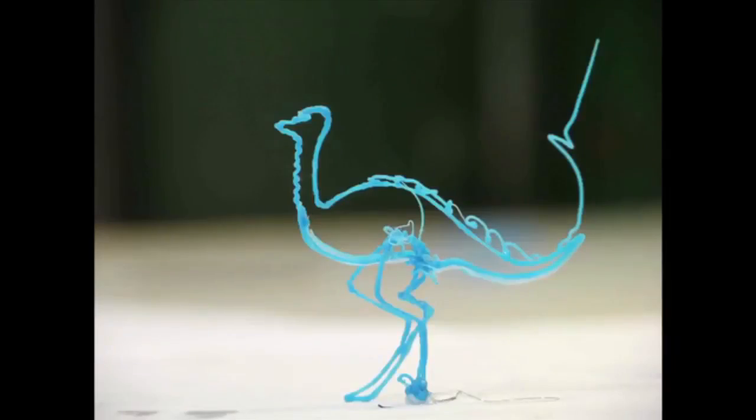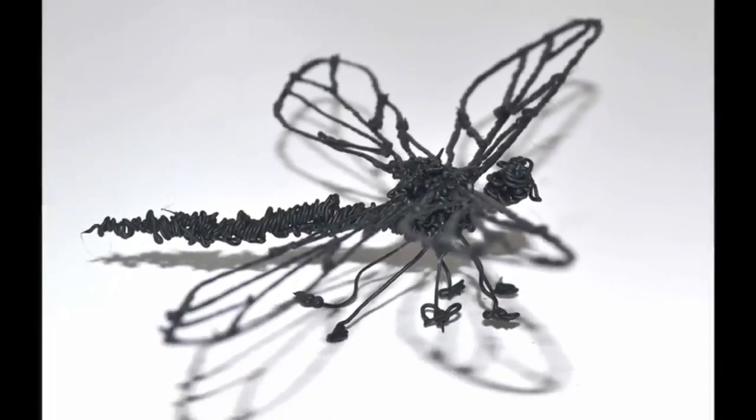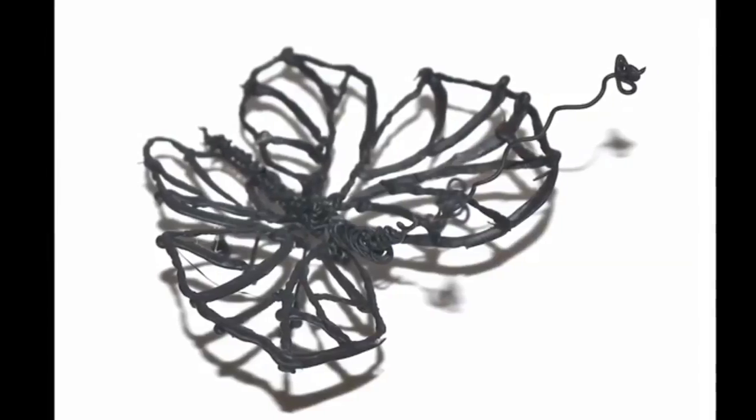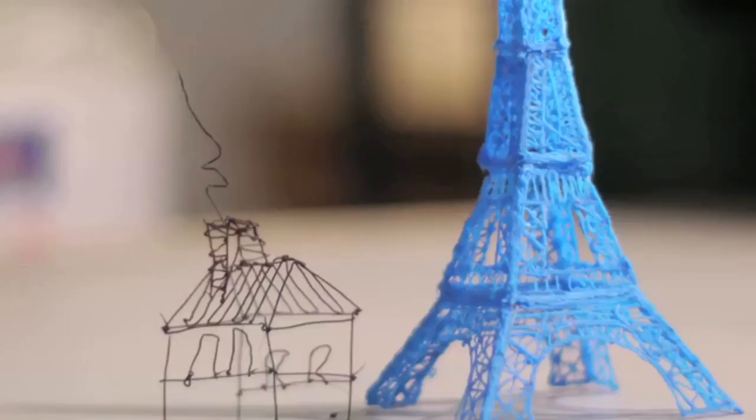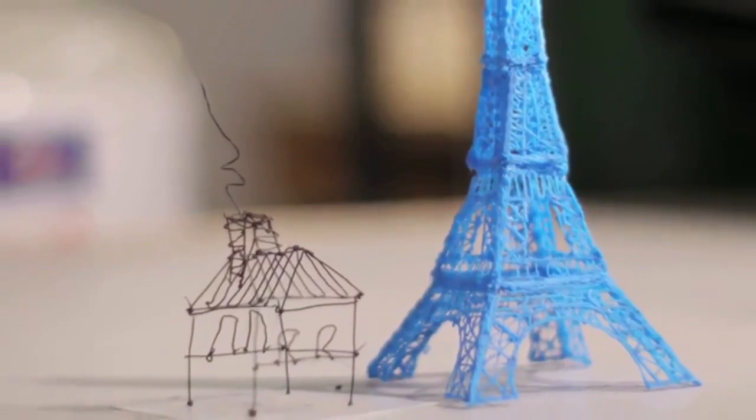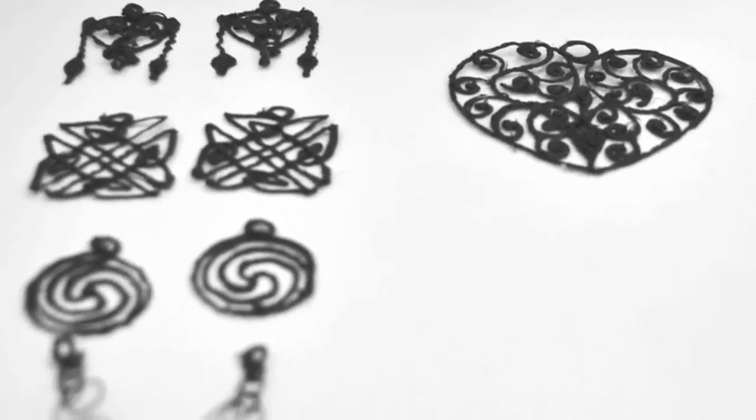So how does it work? 3Doodler uses cutting-edge patent-pending technology to heat and cool plastic as it passes through the body of the pen. Just like a 3D printer, plastic cools rapidly and becomes hard.